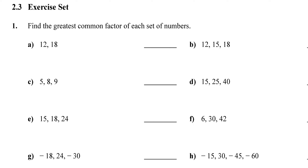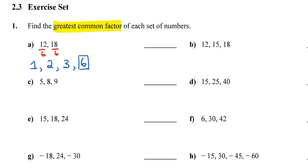Let's take a look at the homework questions from section 2.3. For question 1a, the two numbers are 12 and 18, and I need to find the greatest common factor — the biggest number that divides both 12 and 18. Starting with 1, then 2, then 3, and moving up, 6 is the number that divides both 12 and 18 evenly. So 6 is my greatest common factor for question 1a.